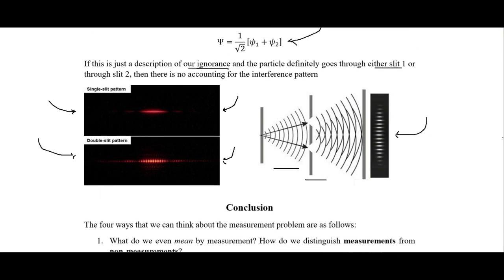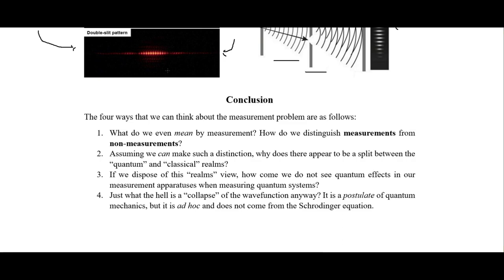In conclusion, we can think of the measurement problem in four ways. First: what do we even mean by measurement — how do we distinguish measurements from non-measurements? Second: assuming we can make such a distinction, why does there appear to be a split between the quantum and classical realms? Why can particles be quantum mechanical in nature, but when they interact with our measuring device, the measurement gives a very classical readout? At what point, between the particle being measured and the readout, does it go from being quantum to classical?